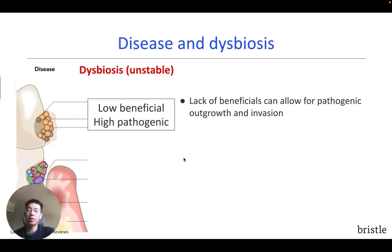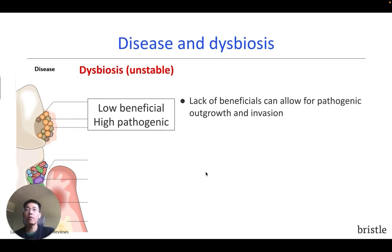Now let's take a look at what happens in disease. A dysbiotic microbiome allows for the overgrowth of pathogens. For example, with cavities, beneficial microbes normally colonize the tooth surface, balance pH, and help to prevent tooth decay. However, in dysbiosis, these microbes are missing, and acid-producing species become overabundant, causing cavities.